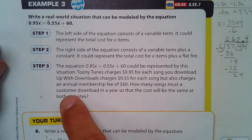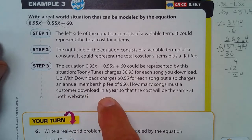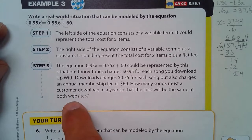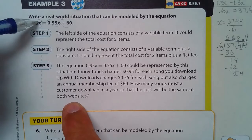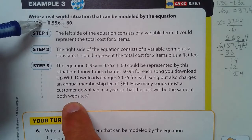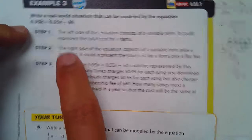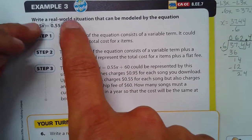How many songs must a customer download in a year so that the cost will be the same at both websites? So this x will represent how many songs you could download to where the cost for both companies is the same.